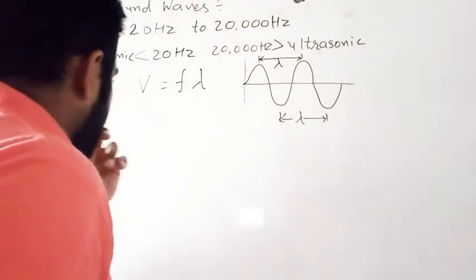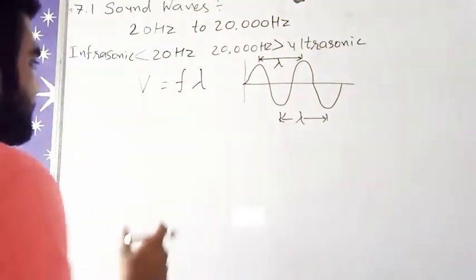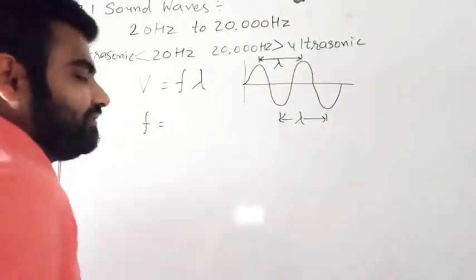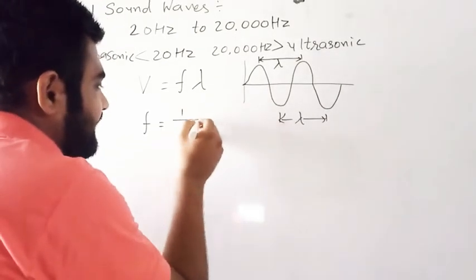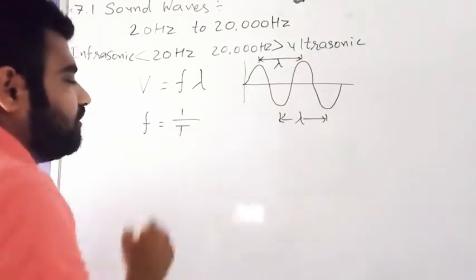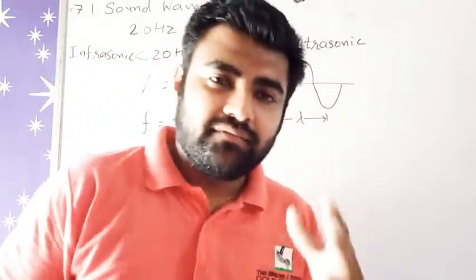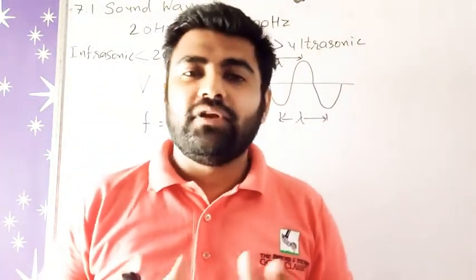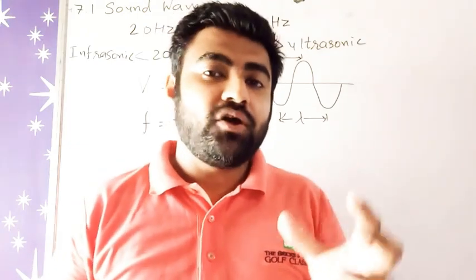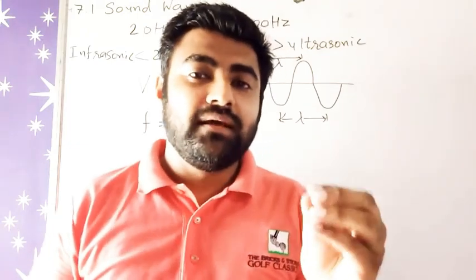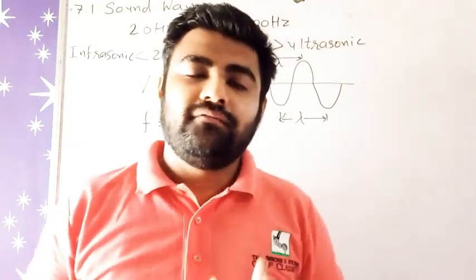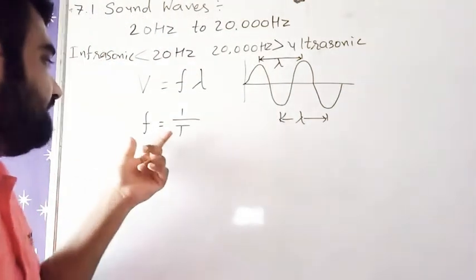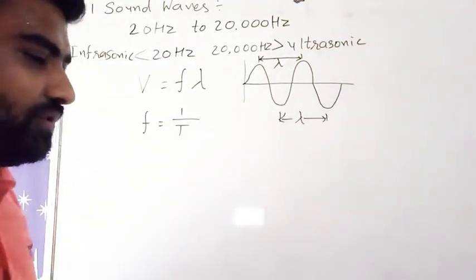Talking about frequency — frequency is nothing but the reciprocal of periodic time. We defined frequency as the number of oscillations per second. So the formula is: f = 1/T.